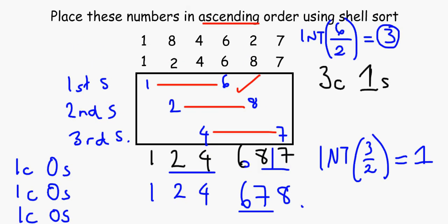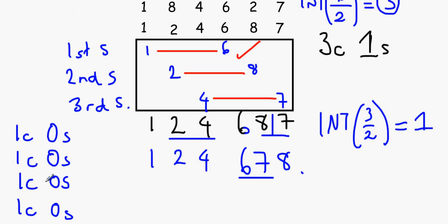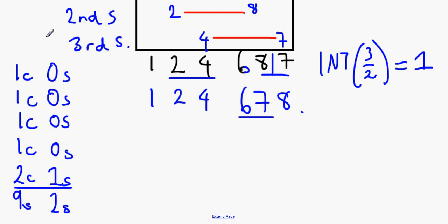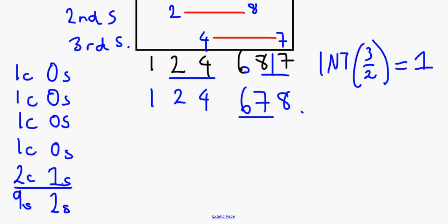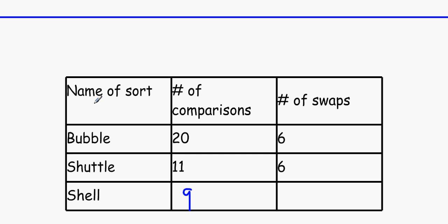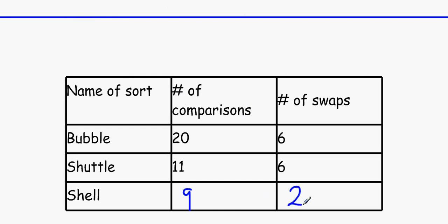So in total, all we've done is one, two, three, four, six, nine comparisons and one, two swaps. And if we plot that in our shell sort, the number of comparisons was nine, and the amount of swaps was, drumroll please, it was two. So quite obviously, the shell sort is the most efficient one, taking the least amount of time and the least amount of swaps. Bubble sort being the least efficient. Look how many comparisons there are. Twenty. Ridiculous.